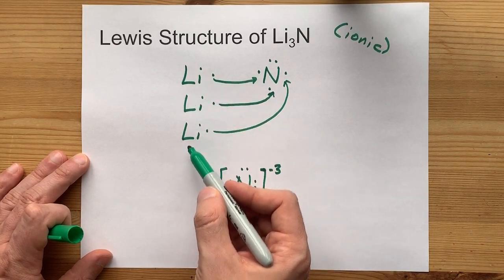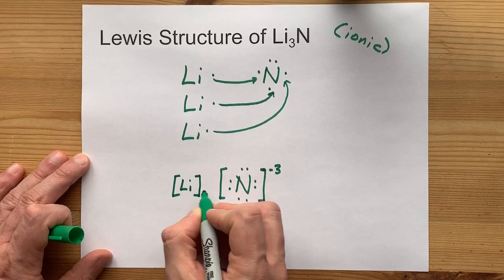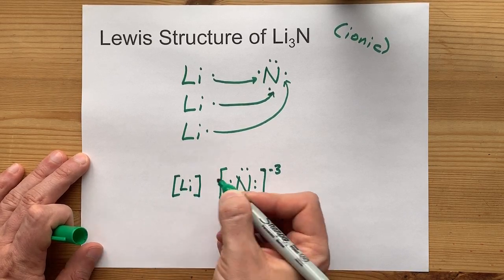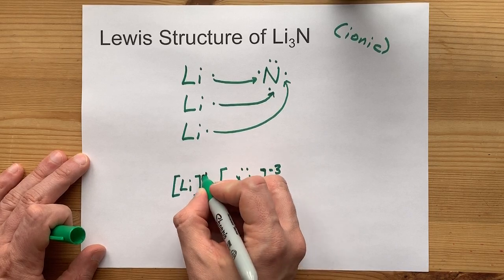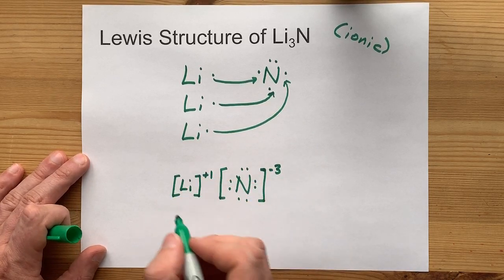Three lithiums, each of those lithiums had one electron around it, but now they have none. So, draw no dots around it. And a plus one charge. That means they lost a negatively charged electron.